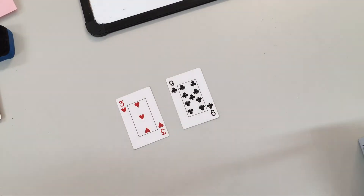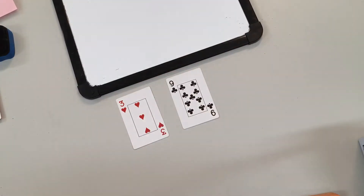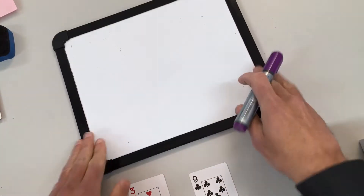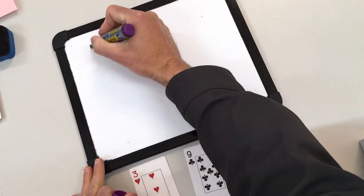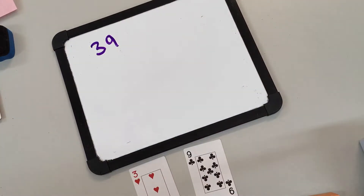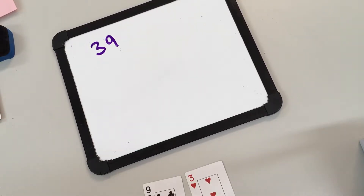I've got the number 39, so that is the smallest number I can make with my cards. The largest number I can make with my cards is 93.